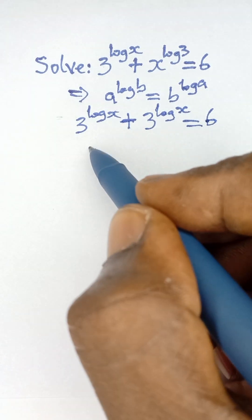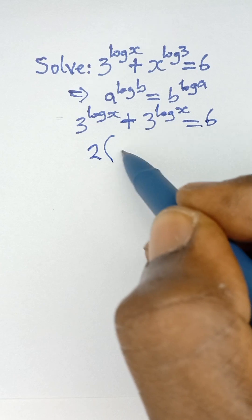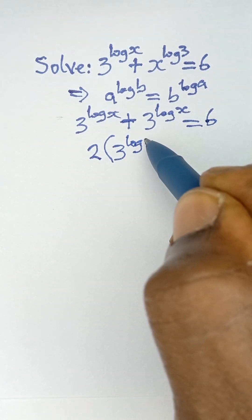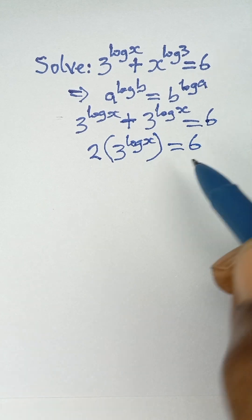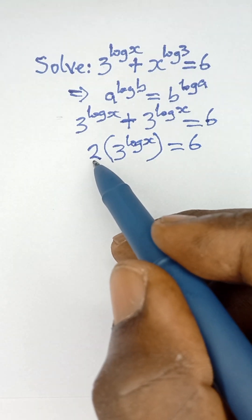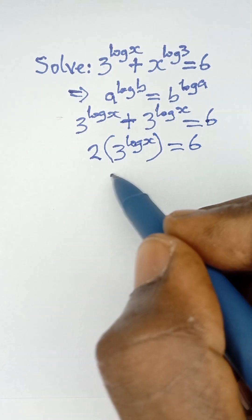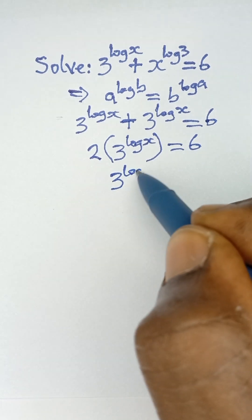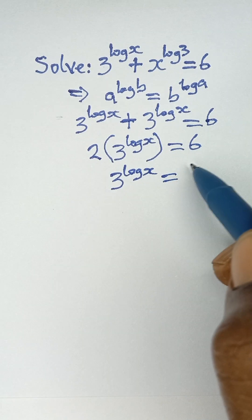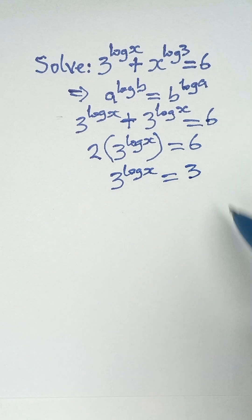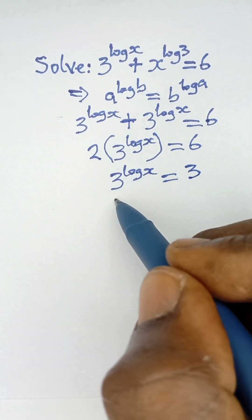We divide both sides by 2. When we divide by 2, we are left with 3 raised to the power log x equals 6 divided by 2, which gives us 3. This can also be expressed as 3 raised to the power log x equals 3.